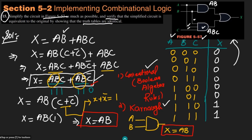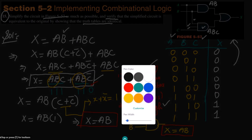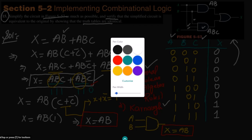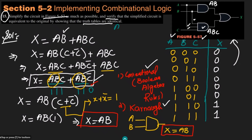Now I have to verify that these two circuits are identical by drawing the truth table for the simplified expression. For X = AB with inputs A and B: 00→0, 01→0, 10→0, 11→1.